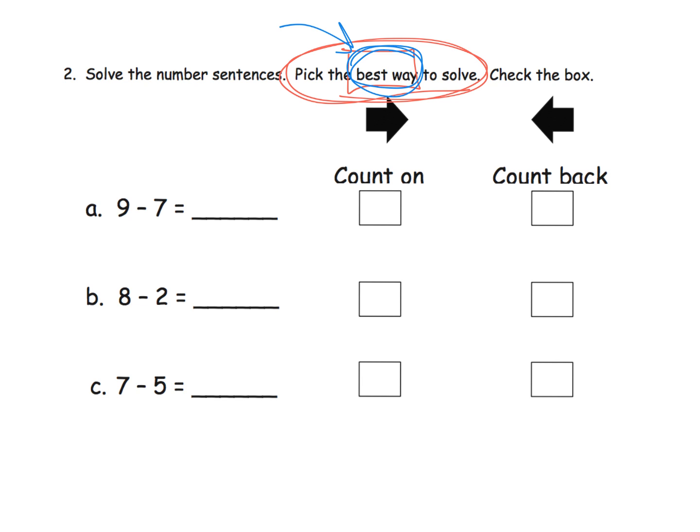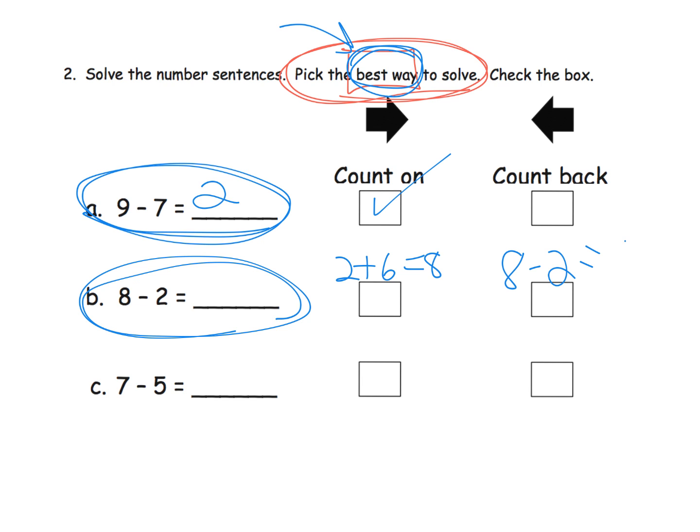Using the number line method, 9 minus 7, I would probably use the count-on method here. Here, 8 minus 2, we could use the count-on method because some of your students might know 2 plus 6 equals 8. But other kids might say I prefer the count-backwards method, and 8 minus 2 gives us 6. In either case, we know the answer is 6. But I think the point is, maybe some students would say this counting backwards method is the least work on that problem.